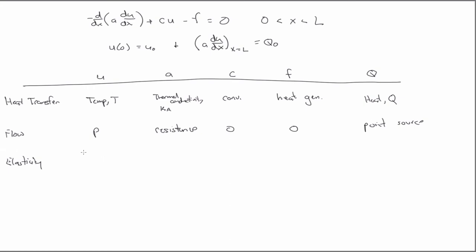So elasticity, U is the displacement, A is the stiffness, axial stiffness, so like AE. This is zero. This is a distributed load, so an axial distributed force. And this is a point load. And there's also, we could do torsion, but you know, it is what it is.